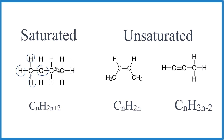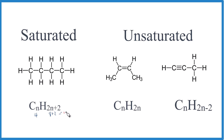That's the case for all of these carbons. We even have a formula for this: CnH2n+2. So we have one, two, three, four carbons, so we should have two times four — that's eight — plus two, we should have ten hydrogens. If you count them, we have ten hydrogens. So for alkanes, these saturated hydrocarbons, we can use this formula.